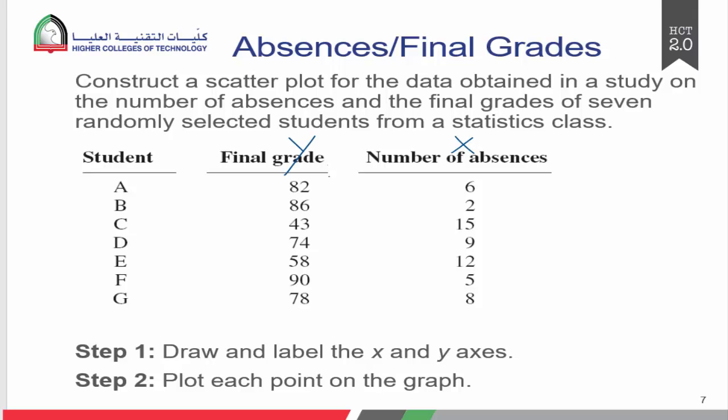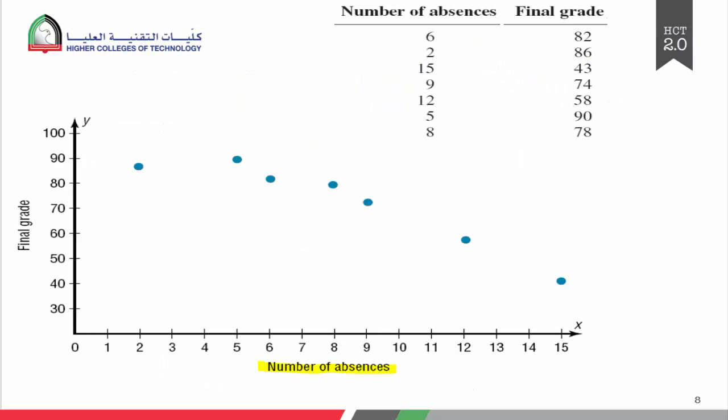x is the predictor or the independent variable and y is the response or the dependent variable. The number of absences is on your x and your final grade, depending on the number of absences, is y.